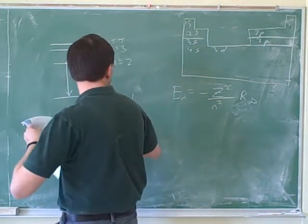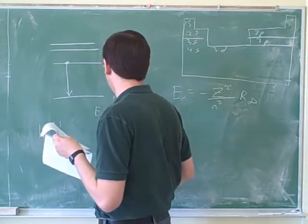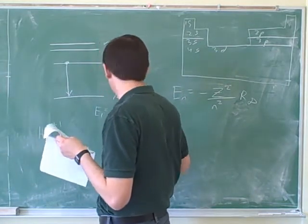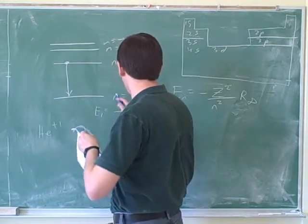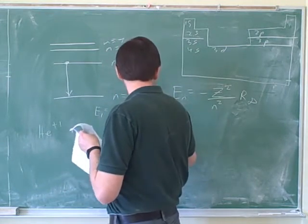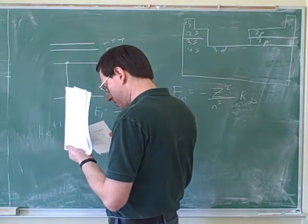So let's start with n equals 1. So we want to find energy level 1. So what should I plug in for z? Two. Two. Because helium has atomic number of 2. And what should I plug in for n here? One. One.